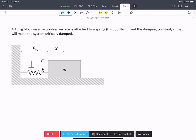In this problem, we have a mass sitting on a frictionless surface attached to both a spring and a damper. We're given a spring constant and we're asked to find the damping constant, C, that will make the system critically damped.